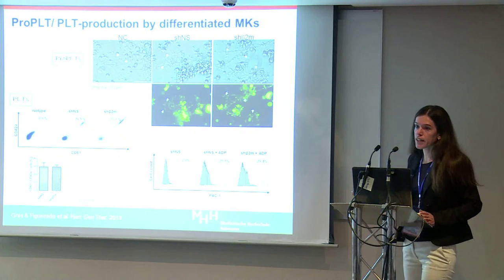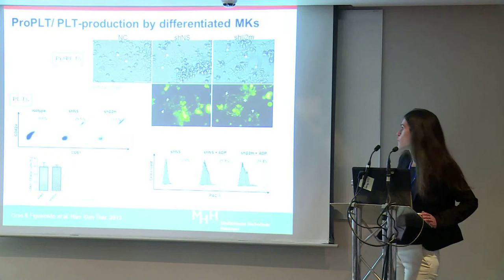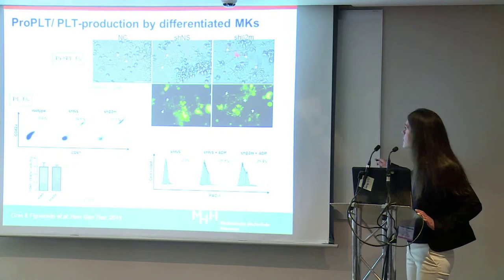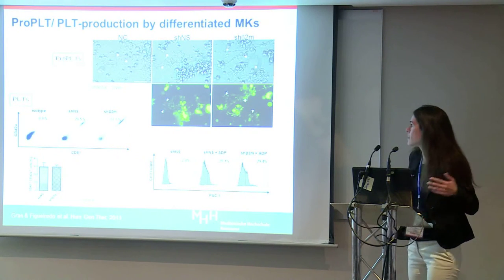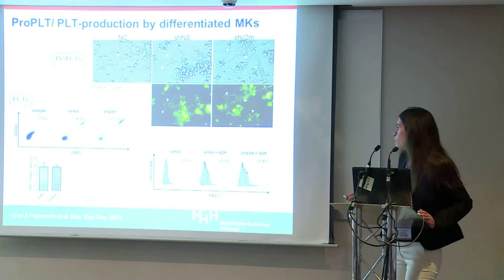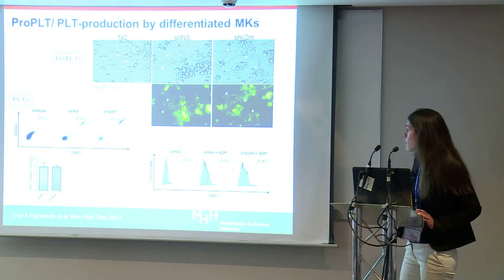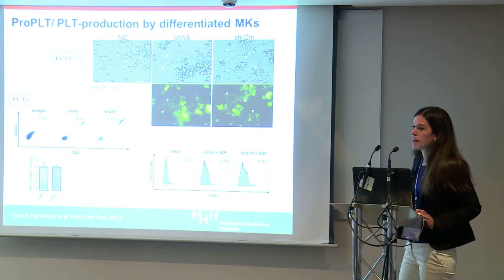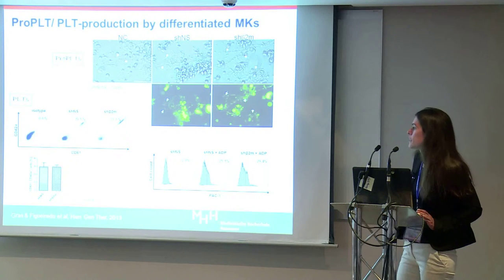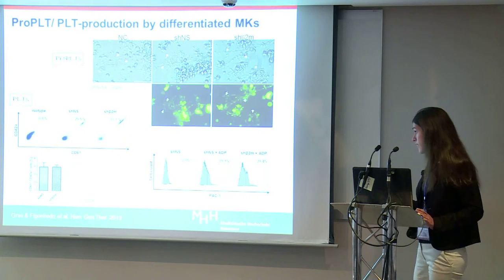We proceeded further with differentiation of megakaryocytes into proplatelets — the long beard-like structures visible here in green due to the GFP reporter in the lentiviral vector. Platelets are then shed from this structure. They present typical platelet markers CD42Y and CD61. Importantly, we observed no difference in differentiation rates between HLA-silenced and non-HLA-silenced megakaryocytes, so HLA silencing does not affect the differentiation process.